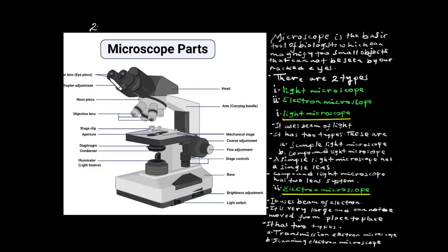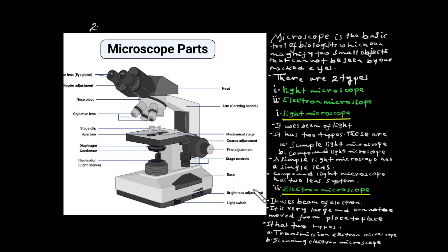The objective lens magnifies at 4x, 10x, 20x, and 40x. Other parts include the illuminator — the light source — the diaphragm, the condenser, and the brightness adjustment.